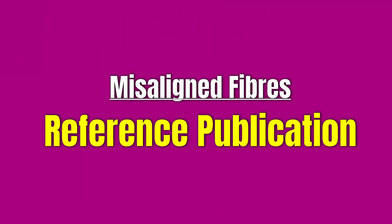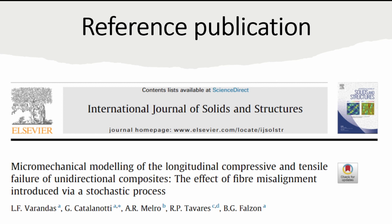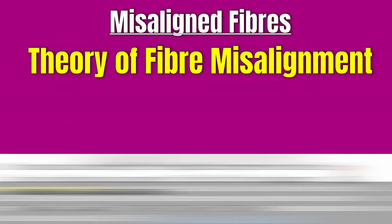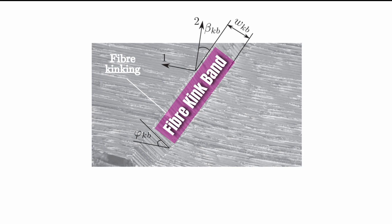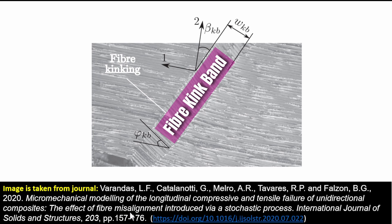The reference publication we're going to use is a paper published by Verandas and colleagues. It's a really exciting paper because they talk about fiber misalignment induced by a stochastic process. This shows fiber kinking, which is a form of compressive failure. The main fiber orientations run one way, and then a kink band forms — the essence of this kink band shows what's happening during compressive failure. There's an angle, theta_kb, showing the original misalignment before the kink band forms.